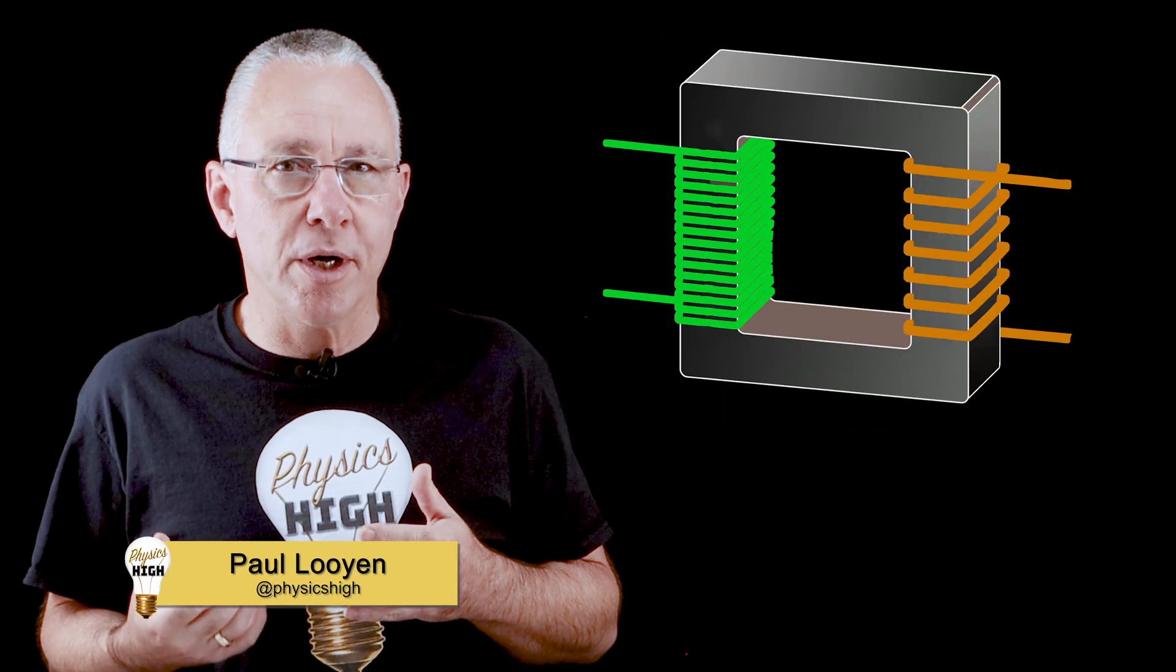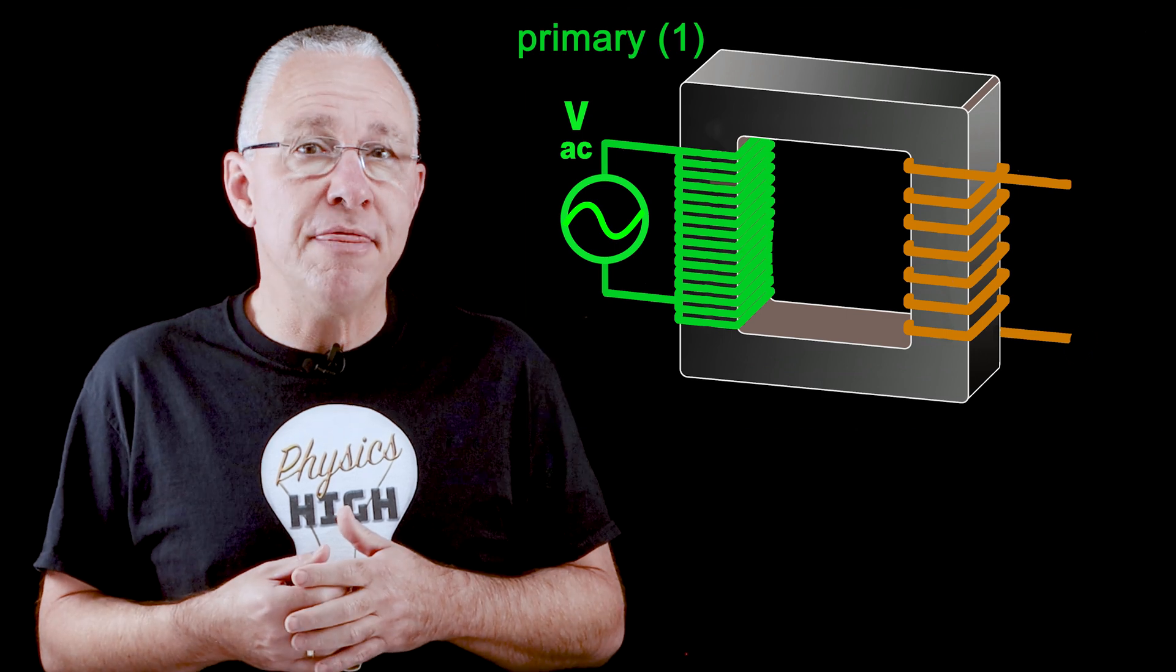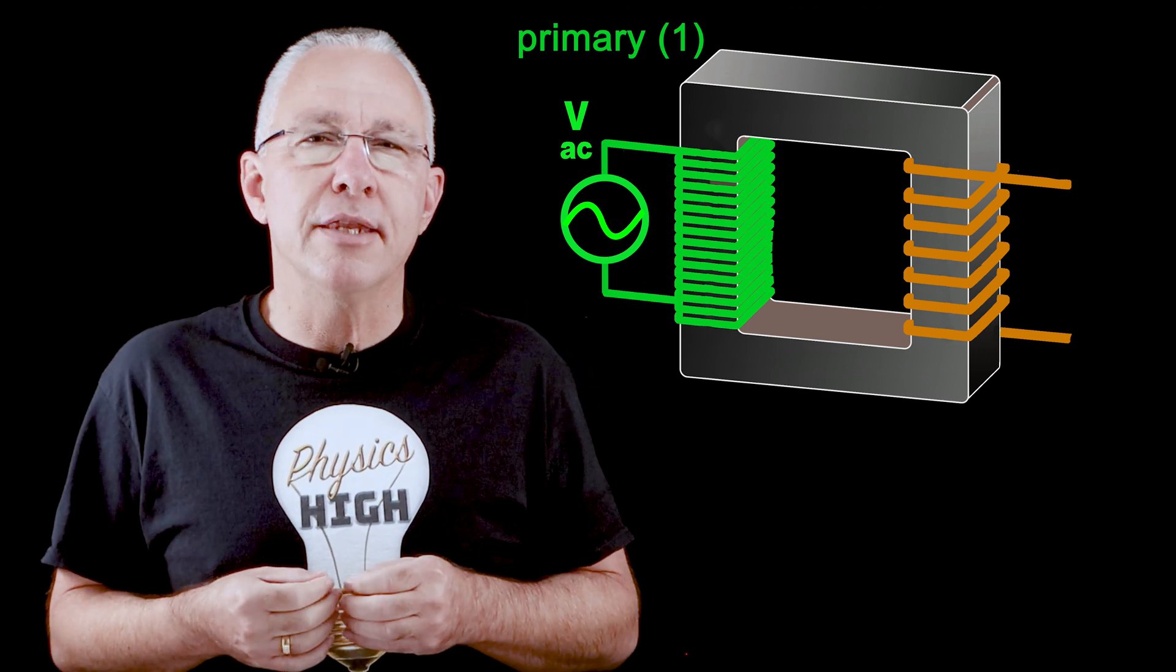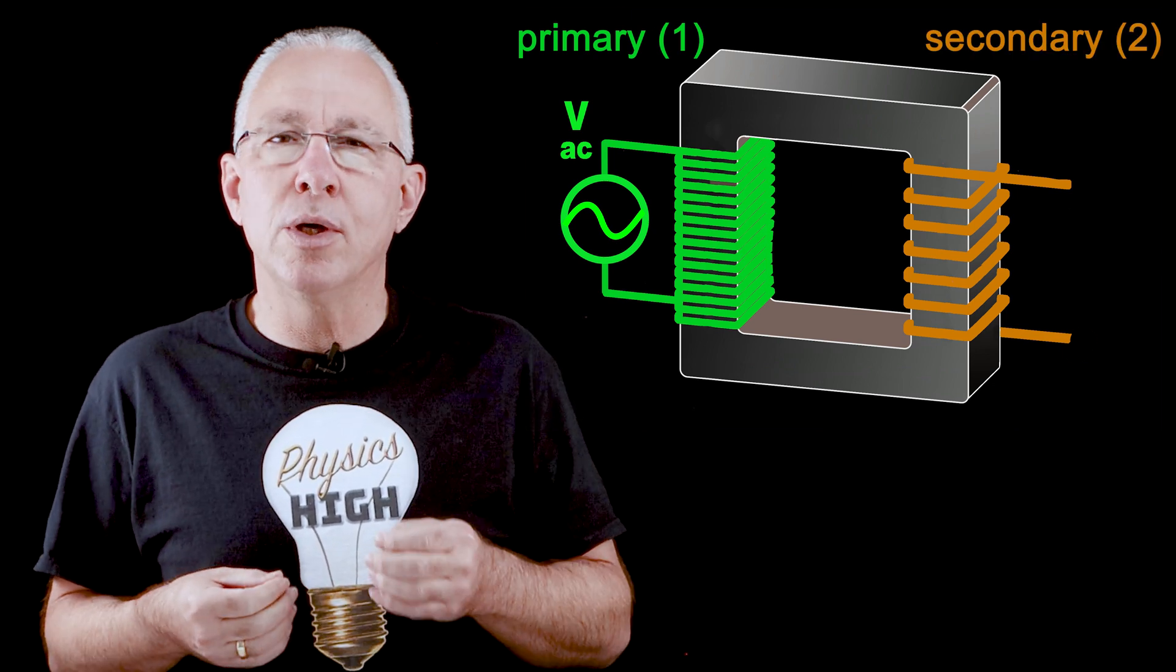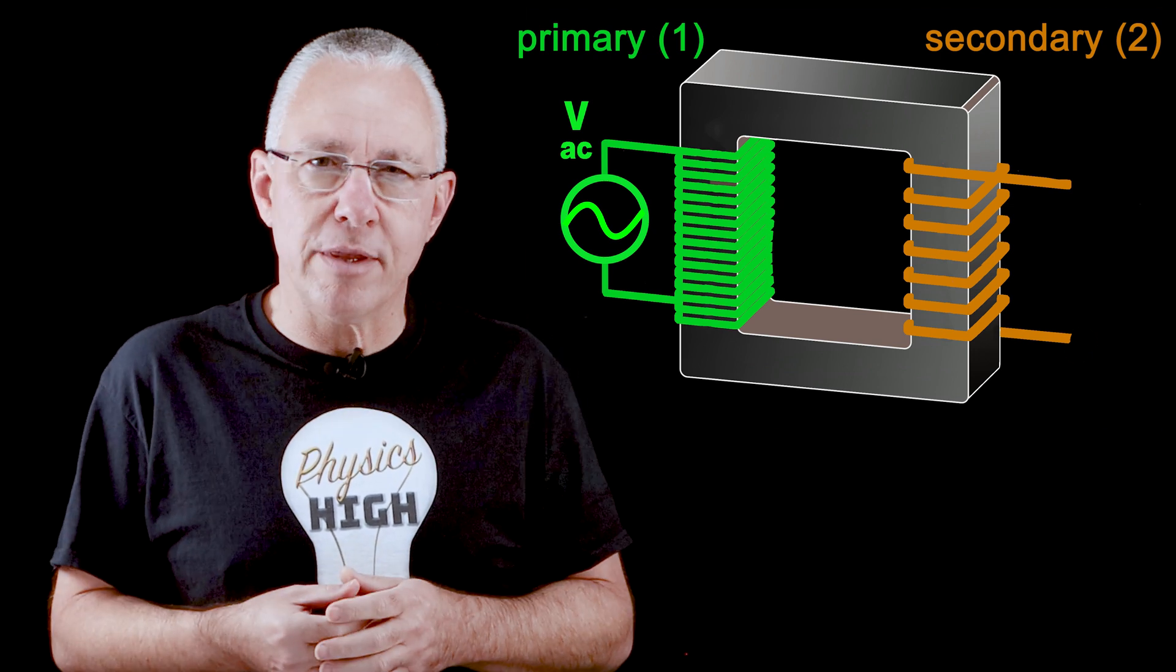Now a transformer is in essence two coils. One coil, called the primary coil, has an alternating voltage connected to it and therefore generates a rate of change of flux. The other coil, the secondary coil, is experiencing this rate of change of flux and therefore will have an induced EMF, or voltage, which is consistent with Faraday's law.